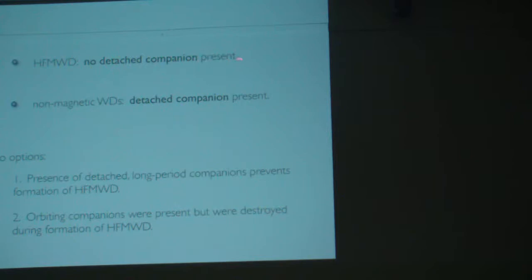So what options are you left with with that data? We know that if you have a high-field magnetic white dwarf, there's no detached companion present. There are two options I came up with to explain this. One is that the presence of a detached long-period companion helps prevent you from creating a highly magnetized white dwarf.